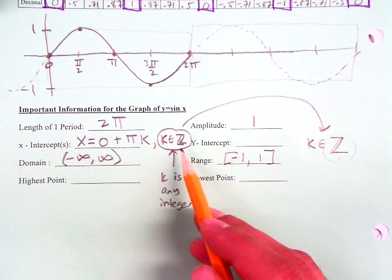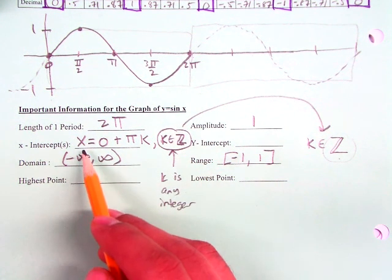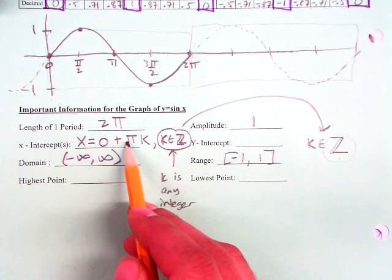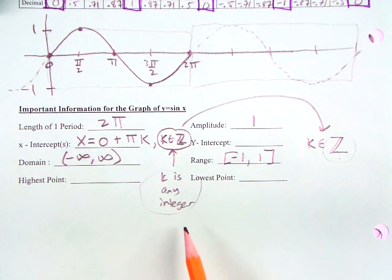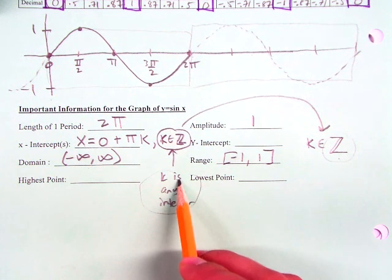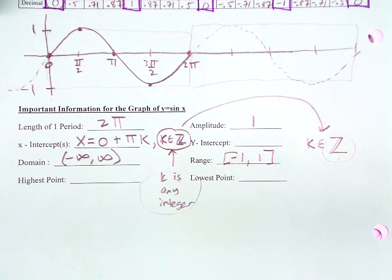If you don't want to write it with symbols, then you can just write out x can be 0 plus pi k, and then write out the words, where k is any integer. Do you guys understand why we have to write k as any integer?